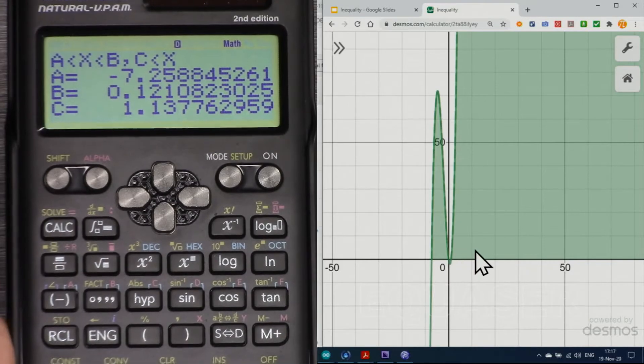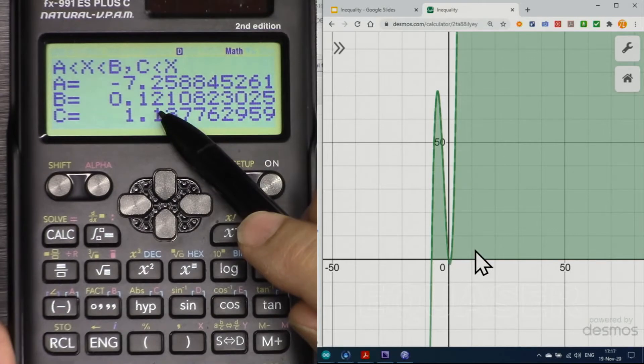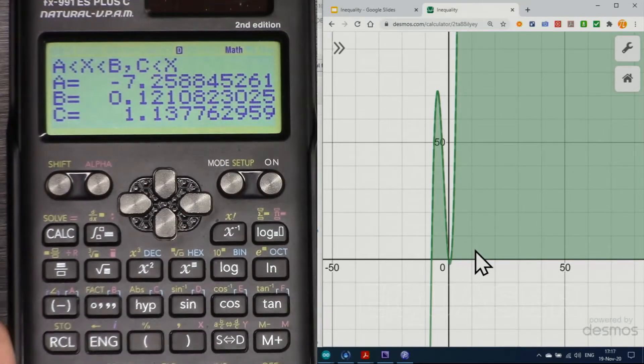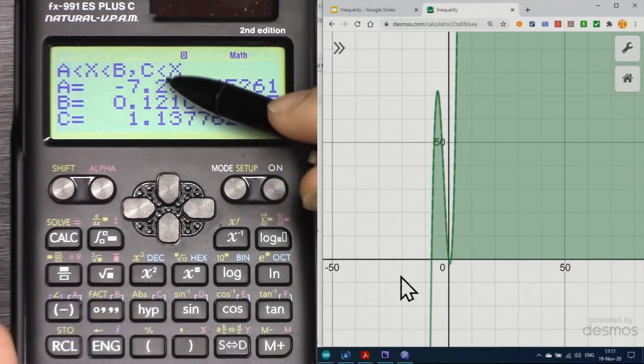And as you can see here, when x is greater than -7 and smaller than 0.1, when y is greater than 1, this condition, this condition, when y is greater than 0.